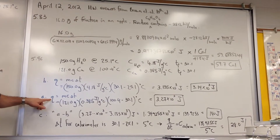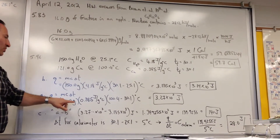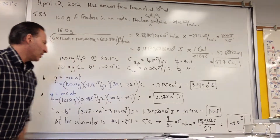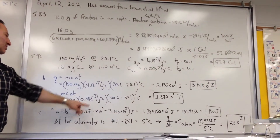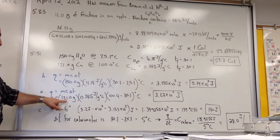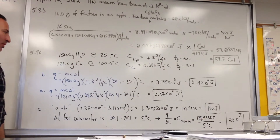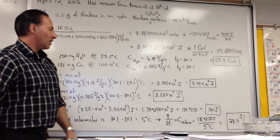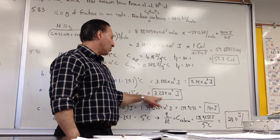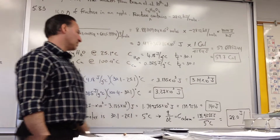The copper, on the other hand, cools from 104 degrees down to 30.1 degrees Celsius. Its specific heat capacity is 0.385 joules per gram per degree Celsius, and there are 121 grams of copper. That means the copper has lost 3.27 × 10³ joules of energy.